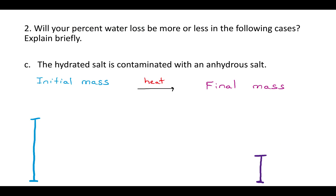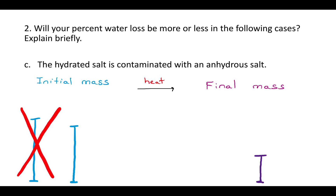The third scenario says the hydrated salt is contaminated with an anhydrous salt. Hydrated means the salt has water sticking to it, and anhydrous means it doesn't. This is affecting the initial mass. When we first get the salt from under the hood, we assume it's completely hydrated — that it has a bunch of water sticking to it. But if some of it doesn't have water sticking to it, the initial mass is really going to be less than it would have been, because water adds mass. How would that affect the difference between the initial and the final mass, which is the percent water loss?